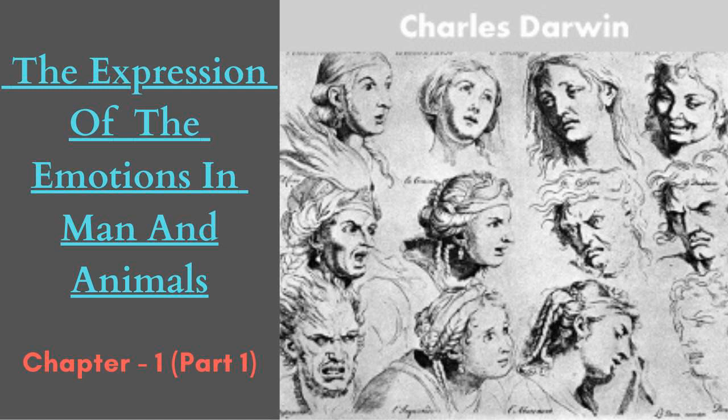Three: the principle of actions due to the constitution of the nervous system, independently from the first of the will, and independently to a certain extent of habit. When the sensorium is strongly excited, nerve force is generated in excess and is transmitted in certain definite directions depending on the connection of the nerve cells and partly on habit; or the supply of nerve force may, as it appears, be interrupted. Effects are thus produced which we recognize as expressive. This third principle may for the sake of brevity be called that of the direct action of the nervous system.